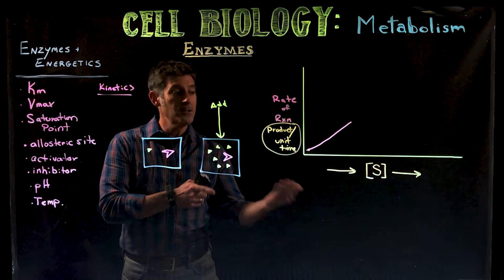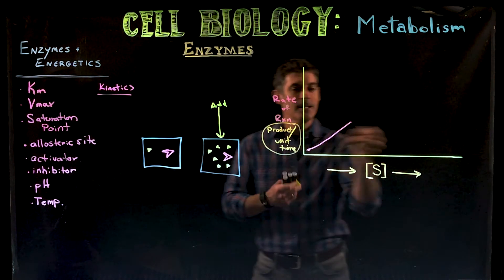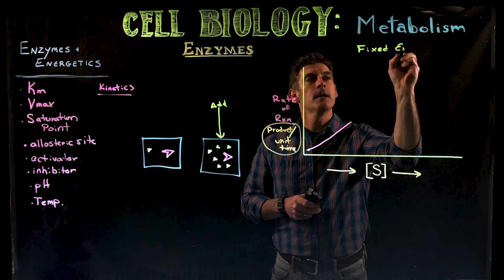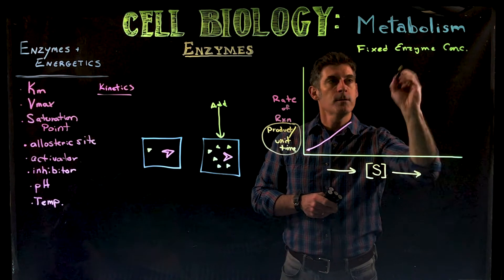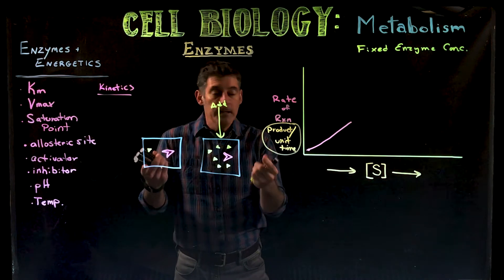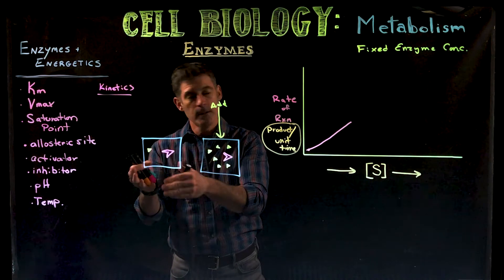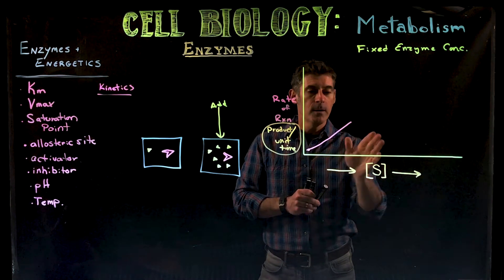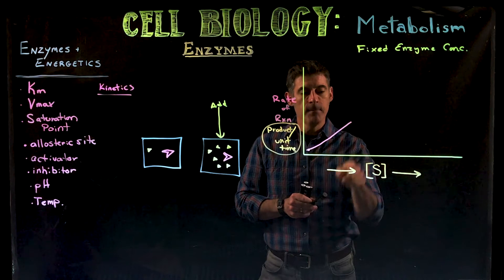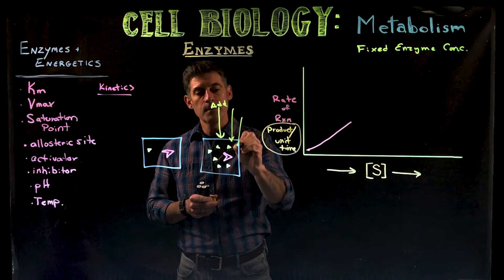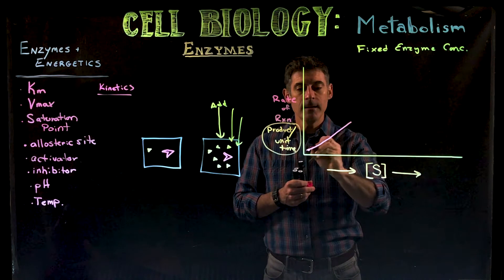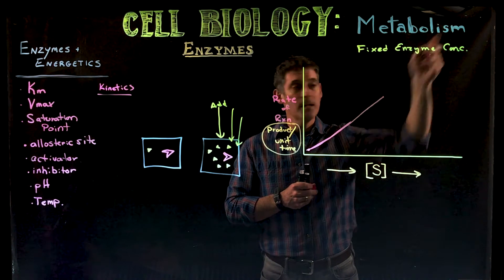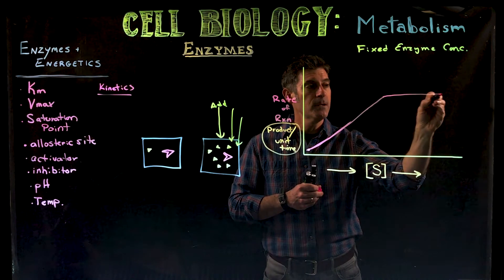In this example we're assuming a fixed enzyme concentration — I drew one enzyme in each chamber. If we add more enzymes, the reaction would go faster, but that's a separate consideration. We're keeping enzyme concentration fixed and changing the amount of substrate: adding substrate, adding substrate, adding substrate. The more substrate you add, the more likely interactions occur and the faster the reaction goes. But the curve isn't just going to keep going up — eventually it levels off.